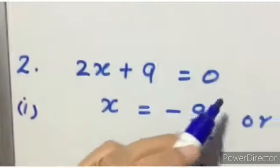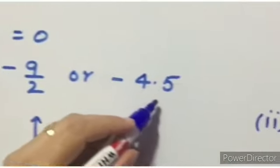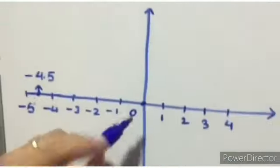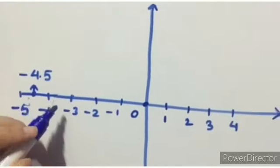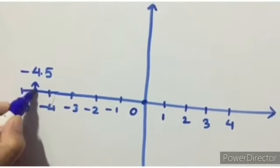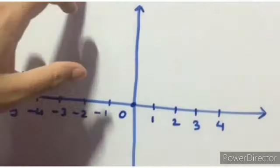Come to the second part. 2x plus 9 equals 0. So x equals minus 9 by 2, or minus 4.5. Represent here: y equals 0. Here, y equals 0 and x equals minus 4.5. So here is your x equals minus 4.5. Simply one point will be there in one variable.